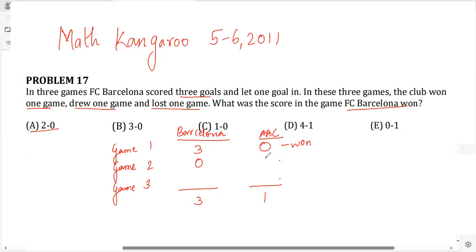And so that means they lost one game. So this is the game that they lost. And this was 0-0, so this was the game that there was a draw. So if you see that they scored three goals, they let one goal in, they won one game, they lost one game and one game was a draw.